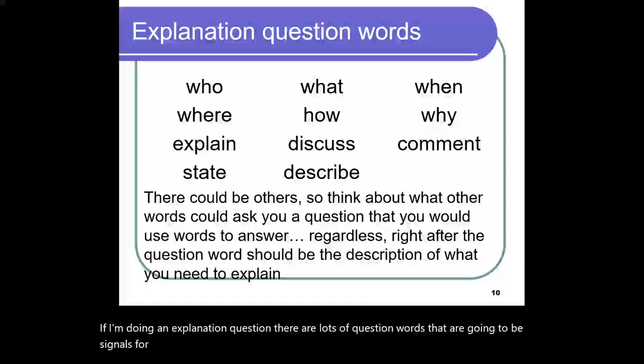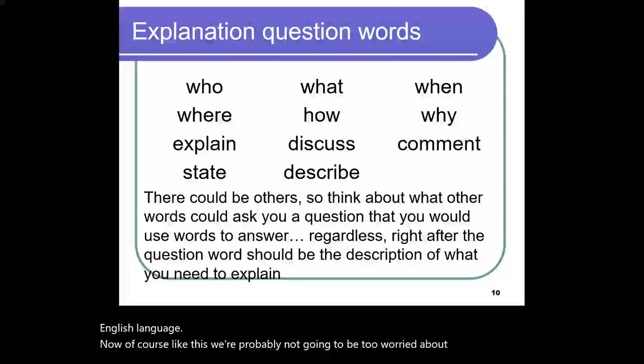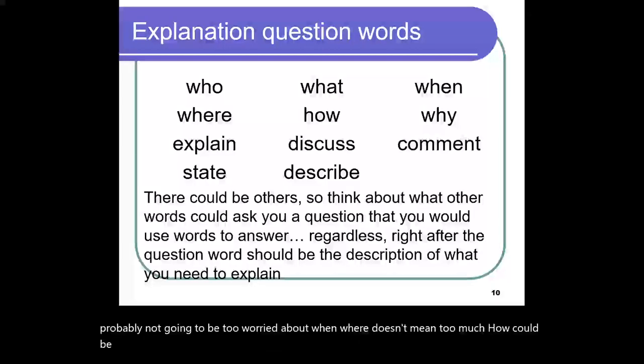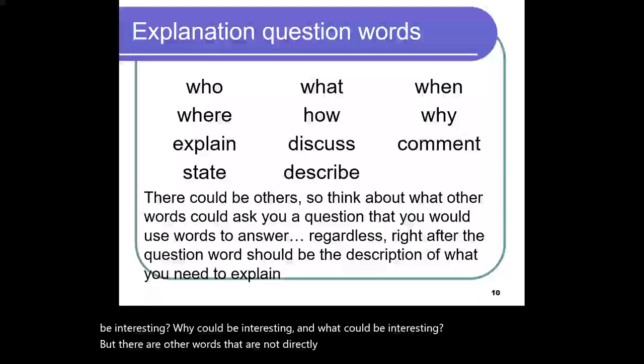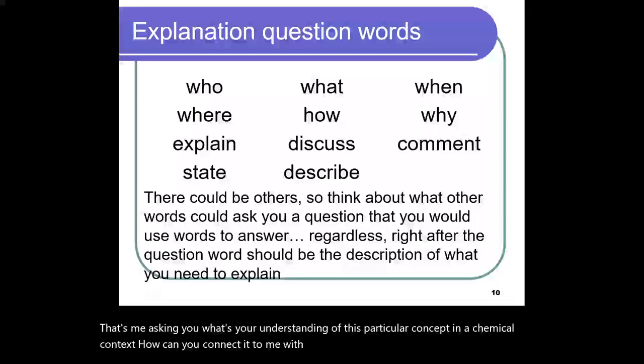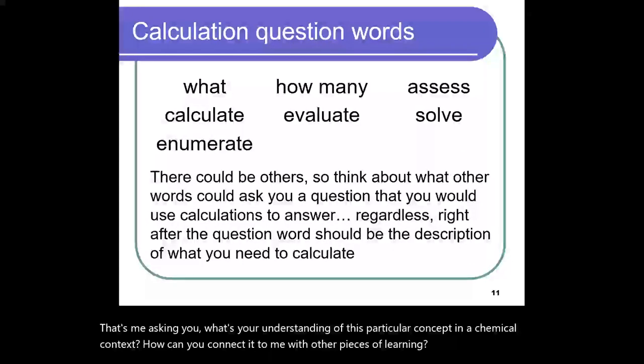If I'm doing an explanation question, there are lots of question words that are going to be signals for you: who, what, where, when, why, and how are kind of the big ones. In a course like this, we're probably not going to be too worried about who or when, but there are other words that are not directly connected to questions: explain, discuss, comment, state, describe. Really anything that says tell me, that's me asking you what's your understanding of this particular concept in a chemical context.